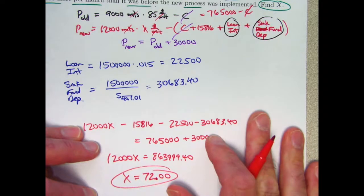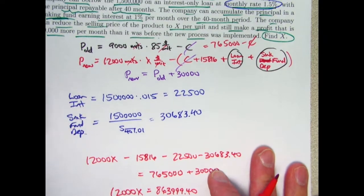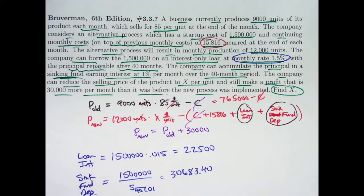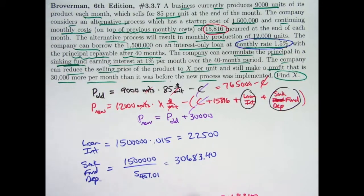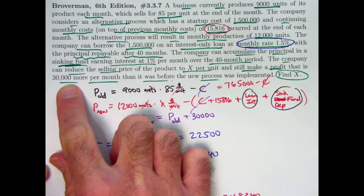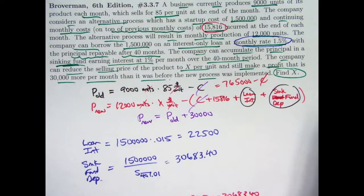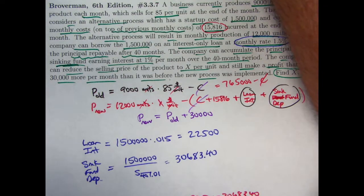So we can reduce the price to $72 per unit from $85 per unit. And the fact that we're selling 12,000 more and based on these costs will still mean that we make in profit $30,000 more per month than we did before. Again, of course, you have to make sure you really can sell 12,000 at this new price.